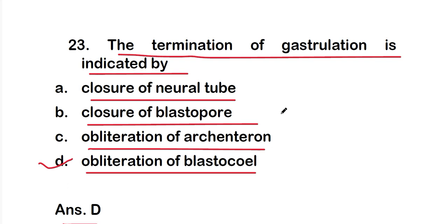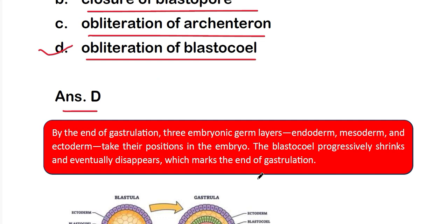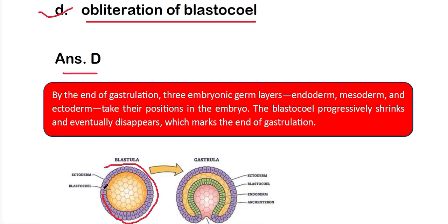By the end of gastrulation, three embryonic germ layers are produced: endoderm, mesoderm, and ectoderm, which take their positions in the embryo. During gastrulation, the blastocoel progressively shrinks and eventually disappears, which marks the end of gastrulation. In the blastula stage, the entire blastocoel region is present, but it disappears as gastrulation produces the three germ layers.